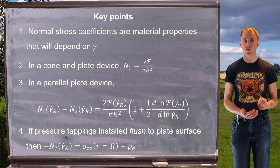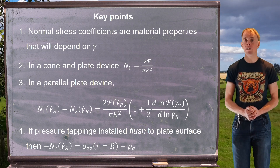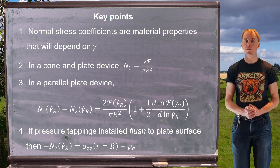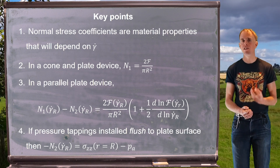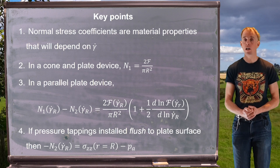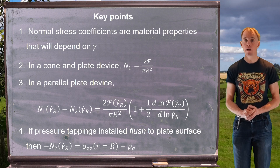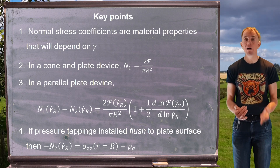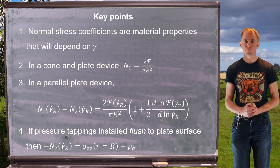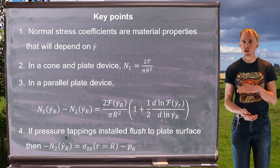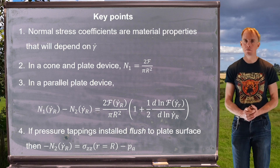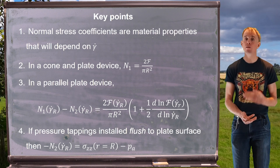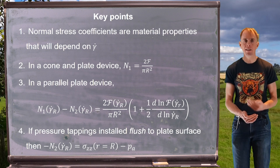To recap: normal stress differences are material properties that depend on γ̇. A cone and plate device is ideal for measuring material properties — it allows us to access N1 in isolation as N1 = 2F/(πR²), where R is the plate radius. Parallel plate measurements give a combination of N1 and N2, from which N2 can potentially be isolated if N1 is already known. Pressure tappings flush with the lower plate surface can directly access N2, with the caveat that N2 is small, electrical noise exists, and many fluids may not yield data of sufficient quality.